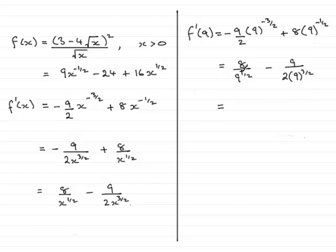8 over 9 to the power half minus 9 over 2 times 9 to the power 3 over 2. So we just need to work these values out. So 9 to the power half, when you've got anything to the power half, remember it means the square root. So we've got square root 9, which is 3, and that's going to give 8 thirds.